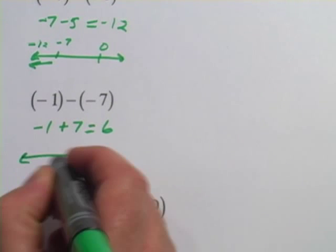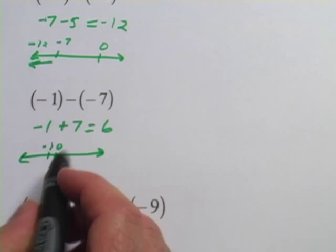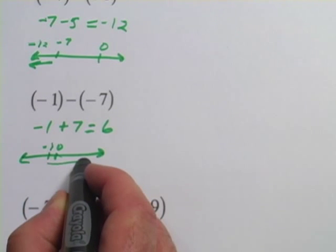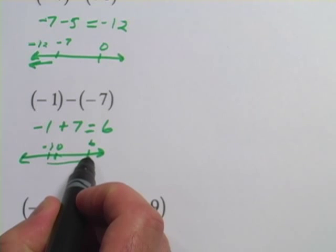If you think about that on a number line, here's 0. You start way back here at negative 1, to go 7 spaces this way you're going to end up at 6 because there's one space to get to 0 and then 6 more.